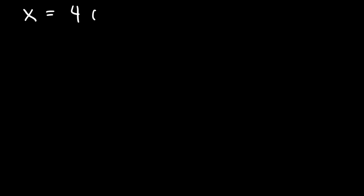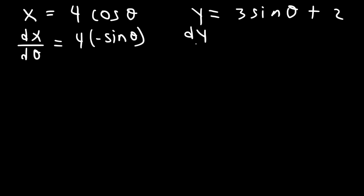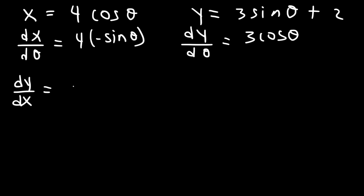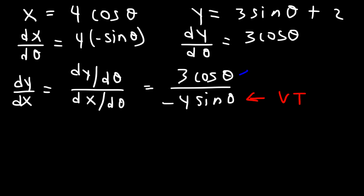Let's work on one more example with trigonometric functions. Let's say x is 4 cosine θ and y is 3 sine θ plus 2. Let's find dx/dθ — the derivative of cosine is negative sine, so that's negative 4 sine θ. For dy/dθ, the derivative of sine is cosine, and the derivative of 2 is 0, so that's 3 cosine θ. So dy/dx is 3 cosine θ over negative 4 sine θ. To find the vertical tangent, set the denominator equal to zero; to find the horizontal tangent, set the numerator equal to zero.